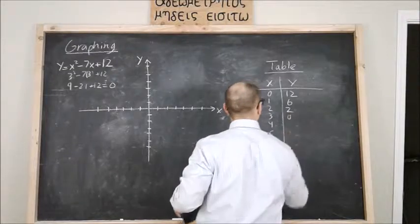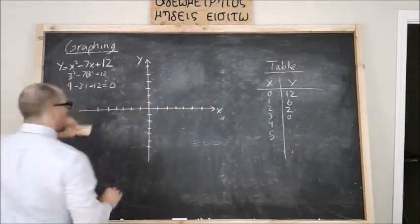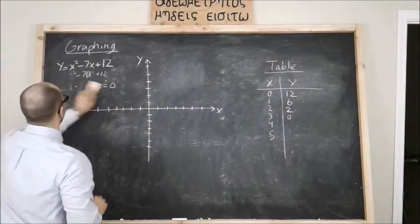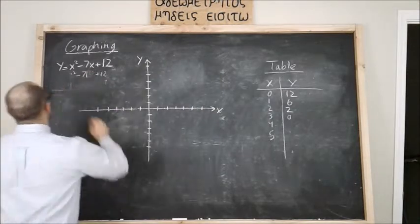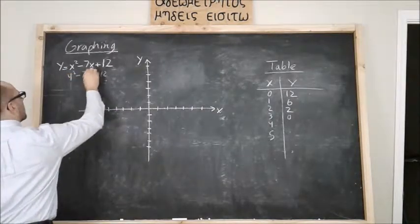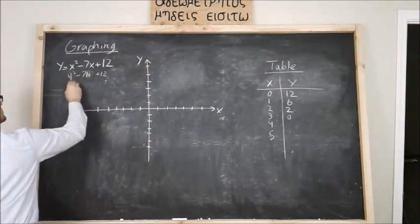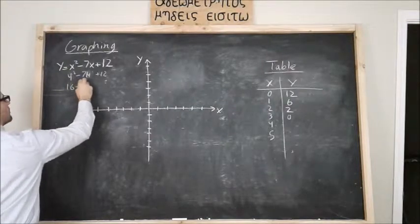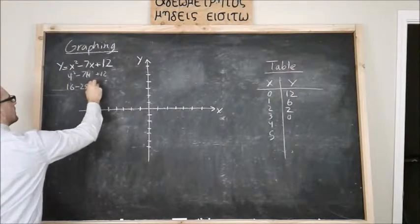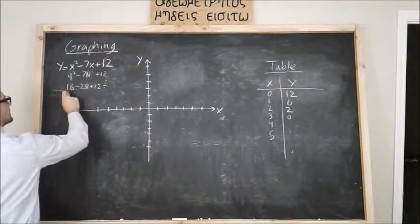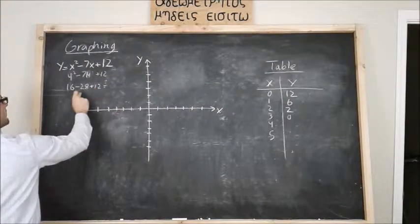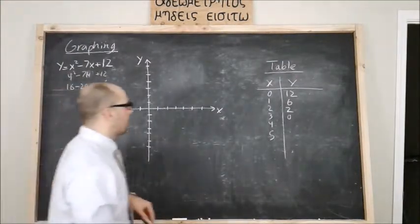So three and zero. Four, I'm going to plug in a four: four squared is 16, seven times four is 28 plus 12, so 16 plus 12 is 28 minus 28 is zero. Hmm, well that's interesting. We'll come back to that.